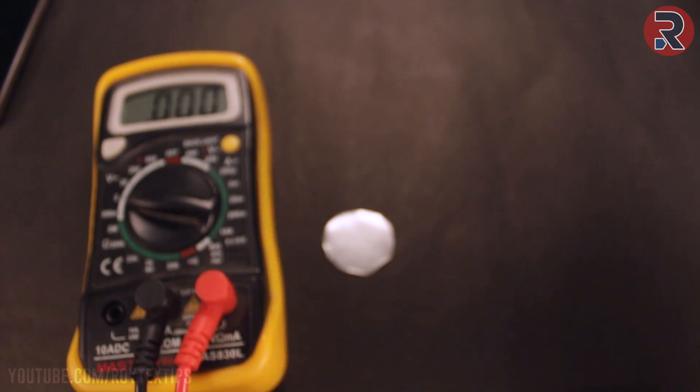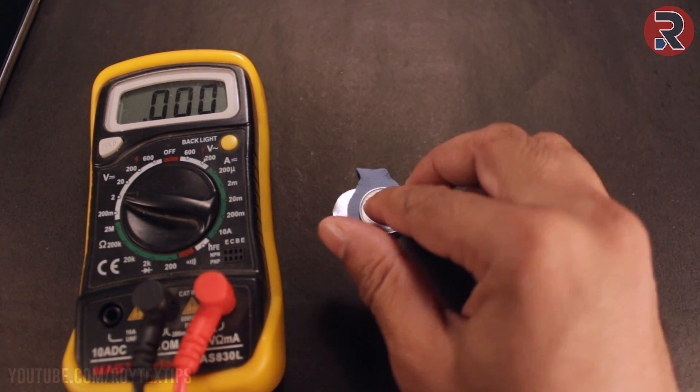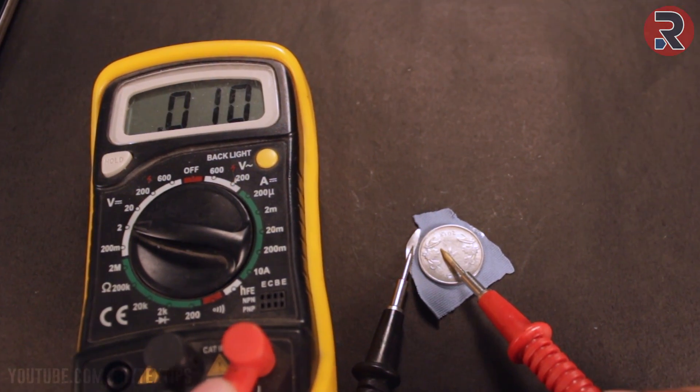This is a piece of aluminum sheet, a one rupee coin, and it's a piece of cloth. I put them together like this. Now if you test them you will find little bit voltage, near about 0.2 volts.